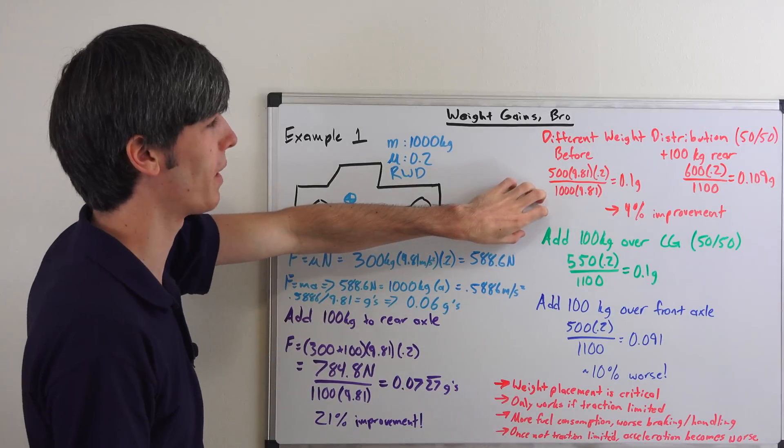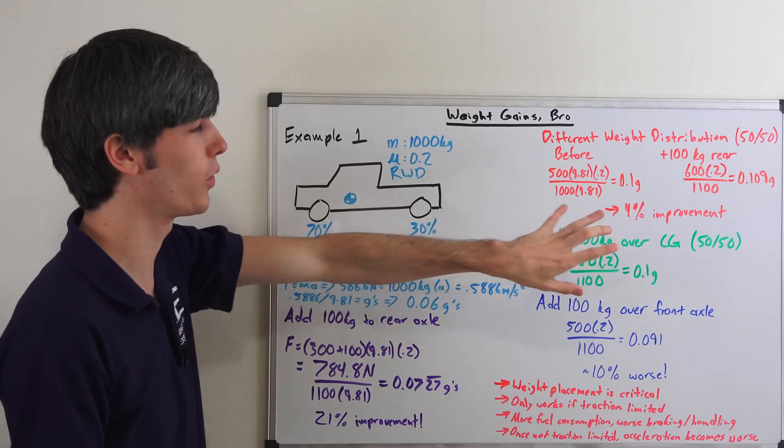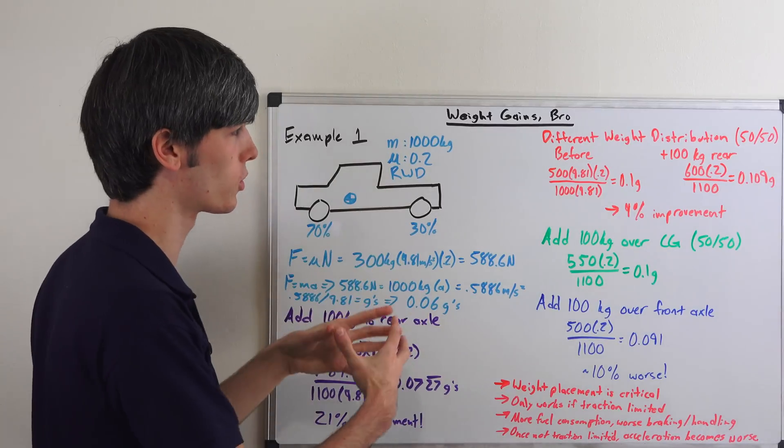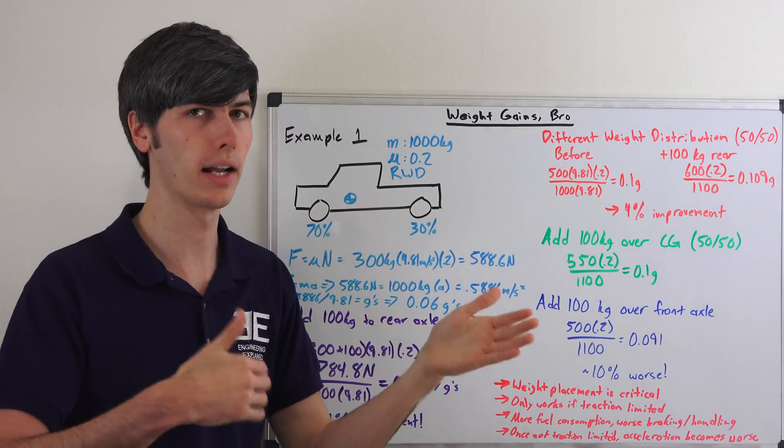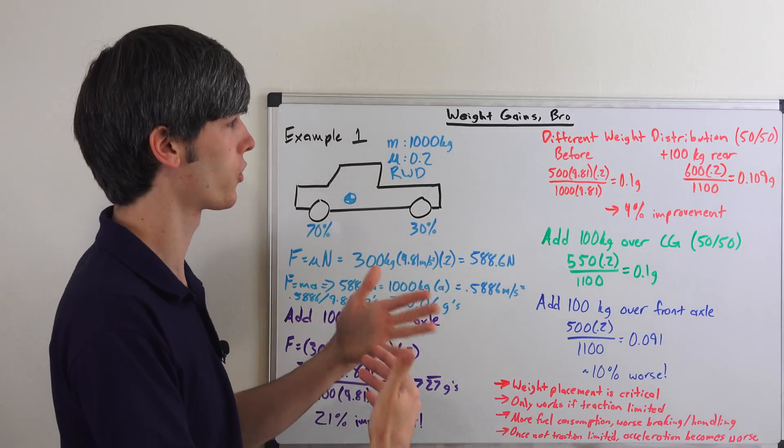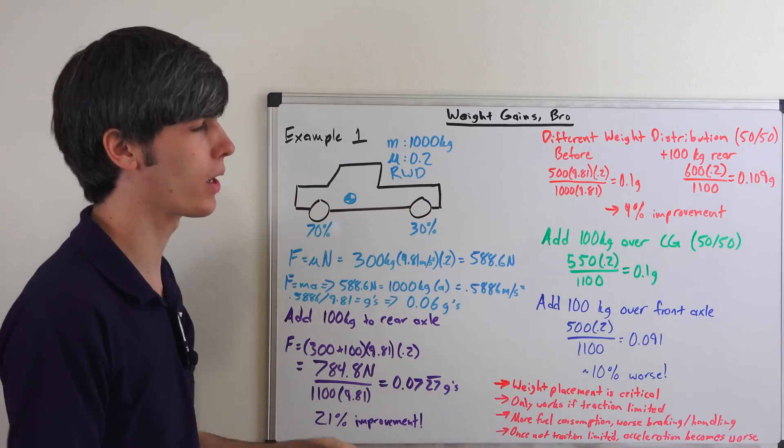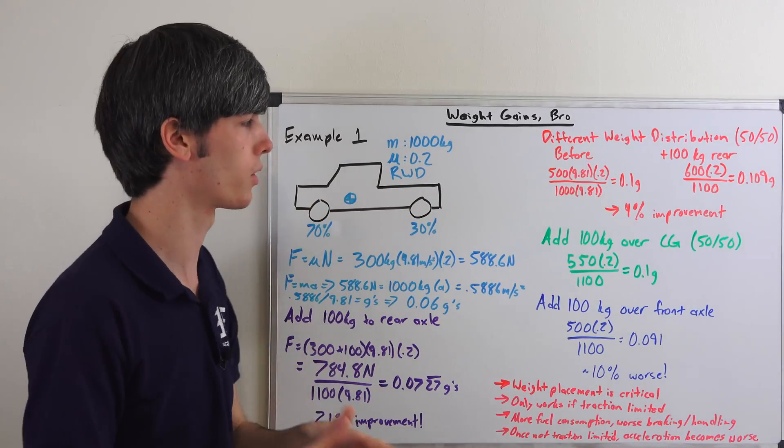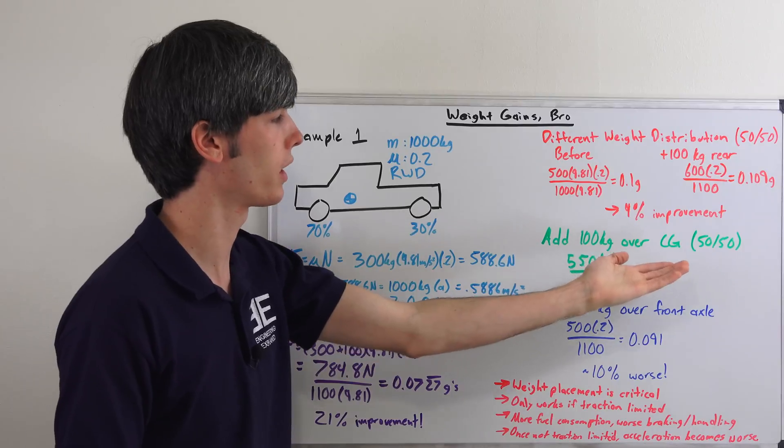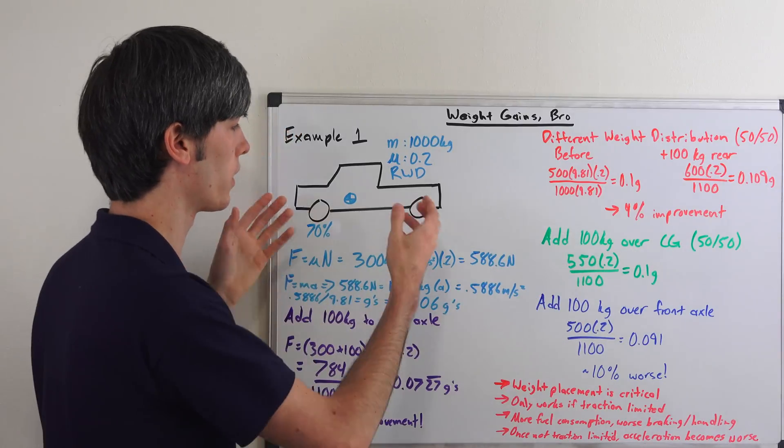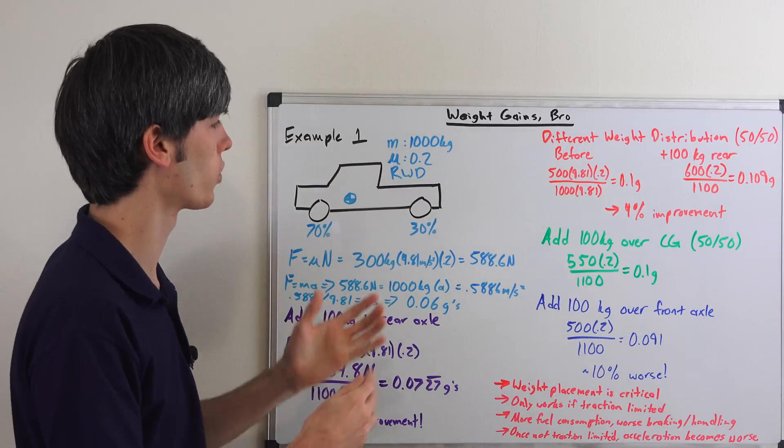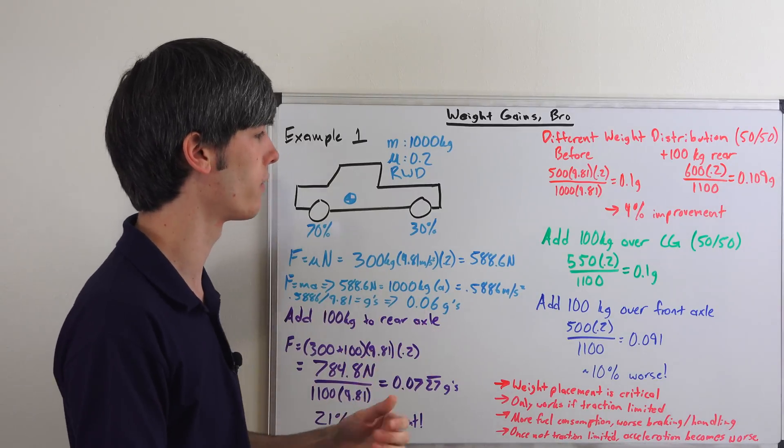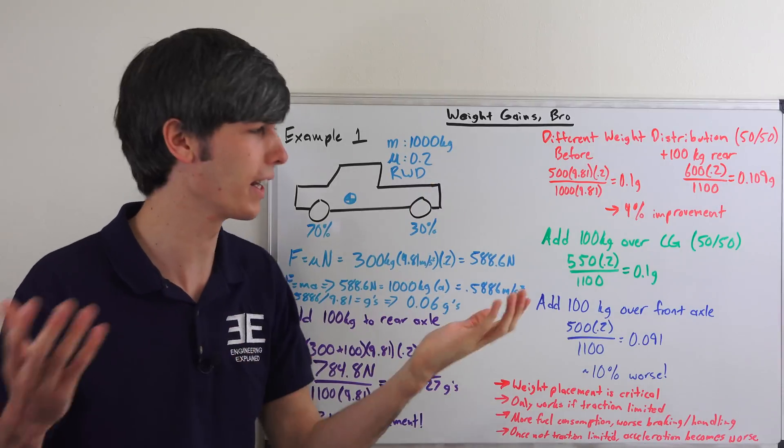The other thing to keep in mind is this only applies if you have two-wheel drive. If you have all-wheel drive or four-wheel drive and you can have the torque split such that the front and rear can optimize torque in order to accelerate, then in any situation adding weight is only going to make acceleration worse because it's essentially doing the same thing here. You're just adding weight over the available traction that you already have. You don't need it and so there's no point in doing it. So if you have four-wheel drive or all-wheel drive you don't really want to be adding weight ever.